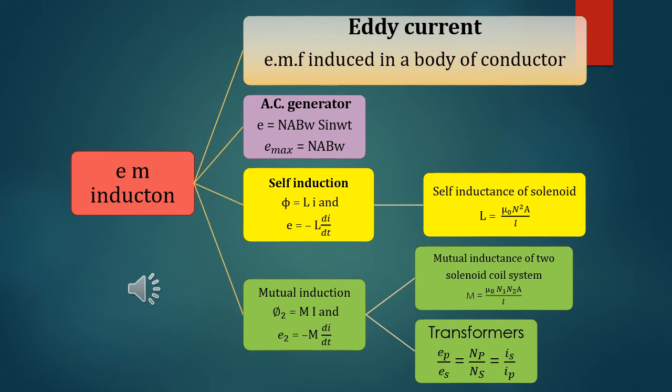Mutual induction: the flux linked with the coil is equal to MI, and the induced EMF in the coil is equal to -M di/dt. Mutual inductance of two solenoid coil system is given by M = μ₀n₁n₂A/l.